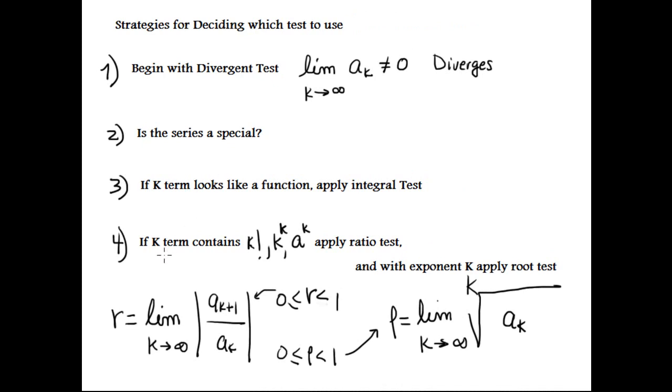Number four: if the k term contains factorial, exponential, or k to the k, you apply the ratio test. When k is an exponent, you apply the root test.